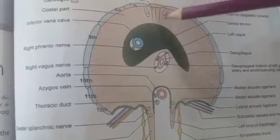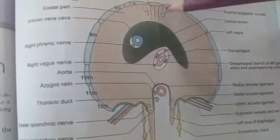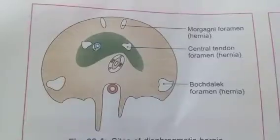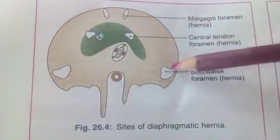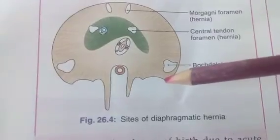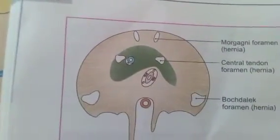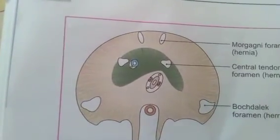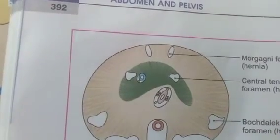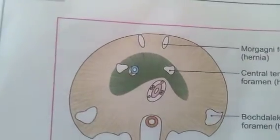The retrosternal hernia occurs through the gap between the xiphoid and costal origin of the diaphragm — this gap is called the foramen of Morgagni or Larrey's space. The posterolateral hernia occurs through the Bochdalek foramen, also known as the costovertebral trigone, where the diaphragm fails to arise from the lateral arcuate ligament, leaving a triangular gap. In posterolateral hernia, the thoracic cavity fills with abdominal organs and the child dies within a few hours after birth due to acute respiratory distress, as this hernia is most common on the left side.